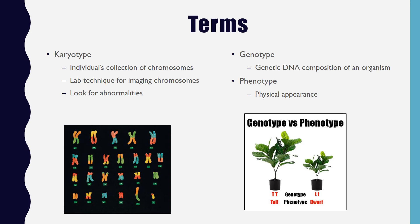A karyotype is an individual's collection of chromosomes — we have 23 pairs, or 46 individual chromosomes. These chromosomes can be visualized when a cell is in metaphase using a special imaging and staining technique. The laboratory technique for imaging those chromosomes is also commonly referred to as a karyotype, and it is generally done to look for abnormalities in chromosomes. And those are actual sour gummy worms — some instructors use them to teach kids about chromosomes.